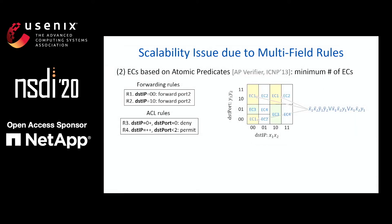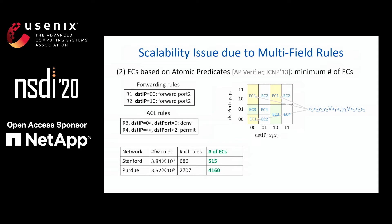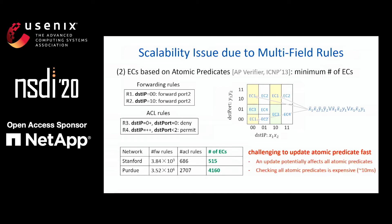Another way is to compute atomic predicates, which are proven to be the minimal number of equivalent classes. The idea is that the number of different forwarding behaviors in the network is quite small, and all the packets with the same forwarding behavior can be expressed with a logical predicate. In this example, there are only four different forwarding behaviors, encoded with just four atomic predicates. Using atomic predicates, the number of equivalent classes for the previous set can be reduced to just a few thousand. However, it's rather challenging to update atomic predicates in a fast way, because each rule update can potentially affect all the atomic predicates, and checking all of them can cause over 10 milliseconds per update.